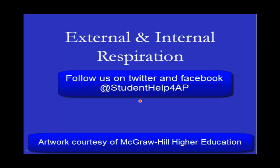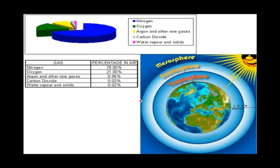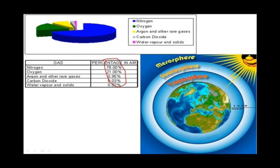Before we can talk about the actual gas movement in the lung, we have to consider the properties of air and gases so that we can understand what drives the movement of gases. The earth has an atmosphere that is a closed system, and inside that closed system is a specific amount of air. Air is a mixture of different gases that all contribute to the total amount of gas. When you have a specific amount of a substance in a closed system, that substance will create a specific pressure. We are going to use those pressures to determine which direction gases will move.